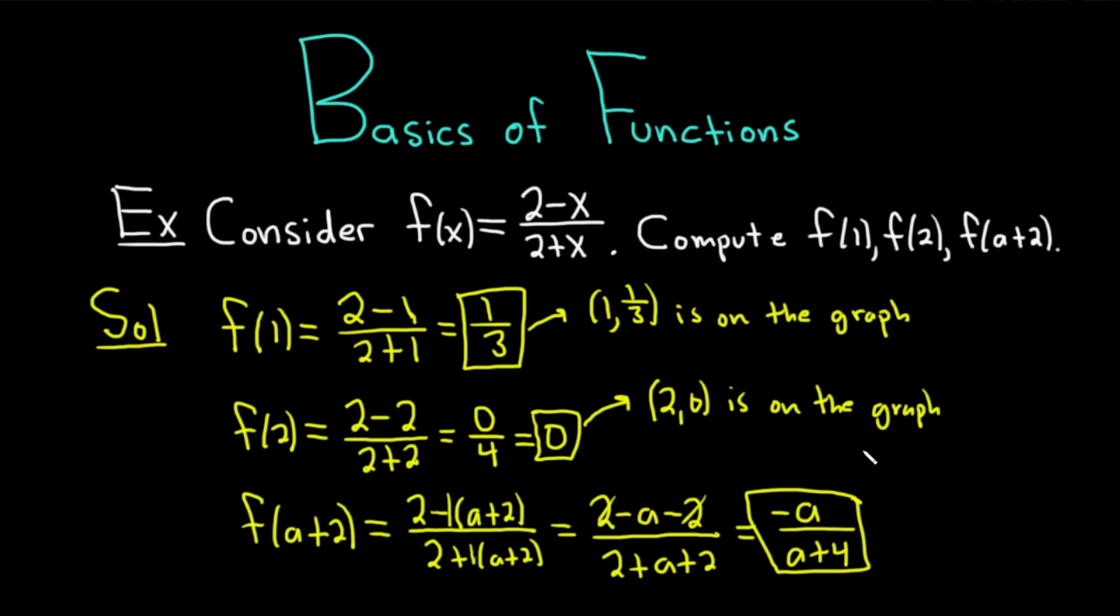And so if you're curious, it would mean that the point a plus 2 comma negative a over a plus 4 is on the graph. Pretty cool, right? Yeah, really nice.